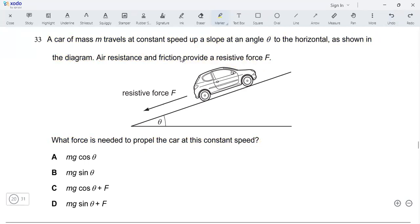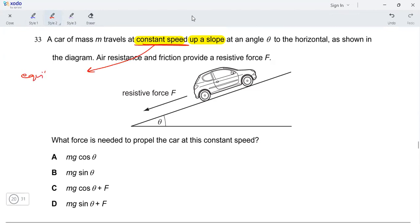Okay, so the car is traveling up a slope at a constant speed. Constant speed would mean that it's in equilibrium, and equilibrium means that all the forces acting on the car must be balanced.